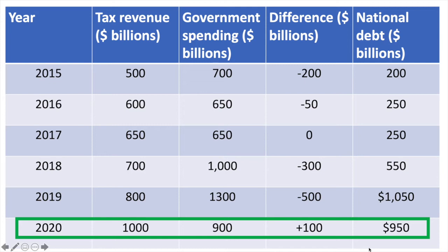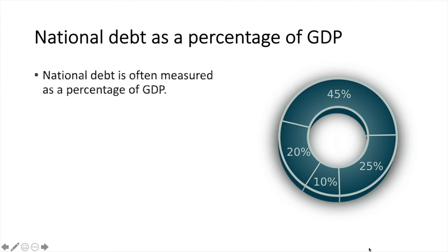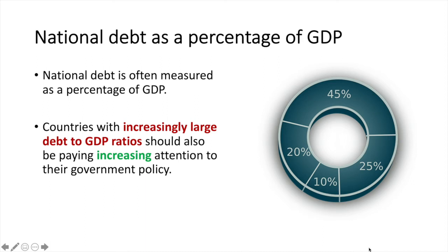We've seen in this example that the national debt is rising, but is it necessarily a major concern? It's important to know the size of the economy as well as the value of national debt. National debt is often measured as a percentage of GDP. Countries with increasingly large debt-to-GDP ratios should be paying increasing attention to government policy. If the economy has a GDP of $1 trillion it should be quite concerned about growing debt levels; however, if the economy has a real GDP of $20 trillion, it may arguably be less of a concern.